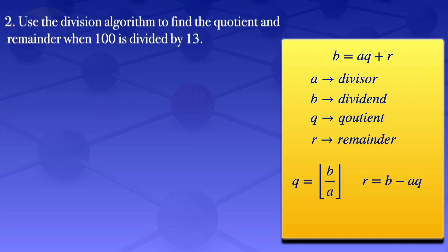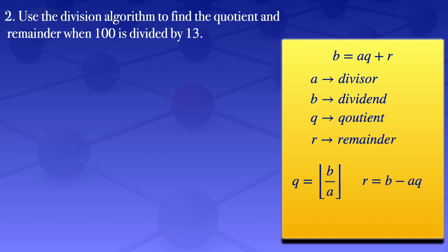Now moving to the next question. In this case, our divisor is 13 and our dividend is 100. So we have b = 100. Our quotient, using this formula, the floor value of b divided by a, gives us the floor value of 100 divided by 13, which will give us 7.